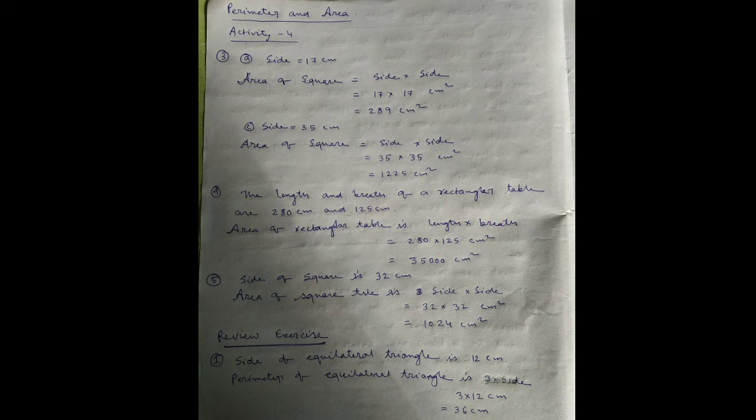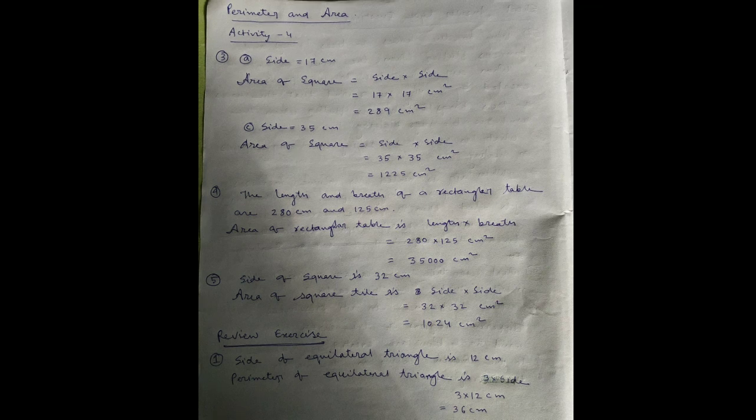Equal to 36 centimeter. Next, number two: perimeter of triangle is 56 centimeter, two sides of triangle are 18 centimeter and 14 centimeter. Perimeter equals first side plus second side plus third side. Third side: 32 plus third side equal to 56 centimeter.